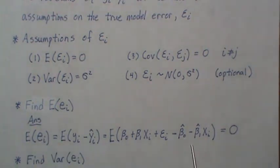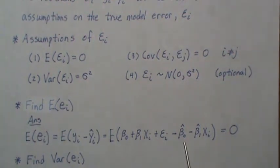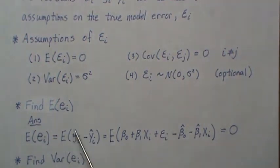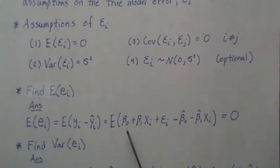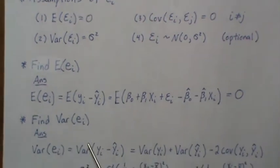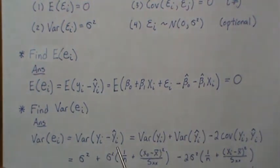We plug in what we know about Y and the least squares line, take the expected value. Constants come out, the estimators are unbiased so β₀ and β₁ terms cancel, and it equals zero. So the mean of our residuals is zero.